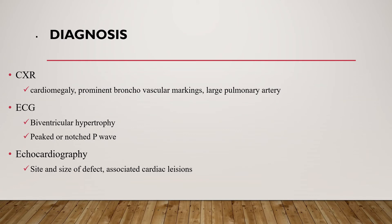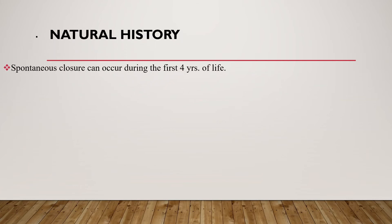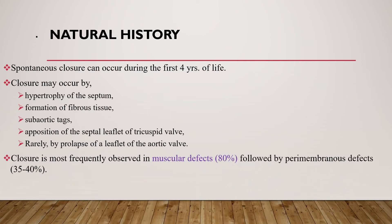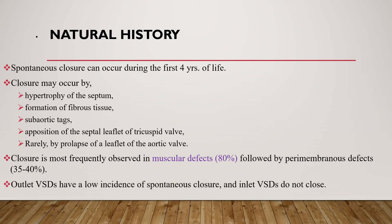Echocardiography can tell us the site and size of the defect and associated cardiac anomalies. Regarding the natural history of VSD, spontaneous closure can occur during the first four years of life by hypertrophy of the septum, formation of fibrous tissue, subaortic tags, opposition of the septal leaflet of the tricuspid valve, or rarely by prolapse of a leaflet of the aortic valve. Closure is most frequently observed in muscular defects. Perimembranous defects can close in 35 to 40 percent of cases. Outlet VSDs have a low incidence of spontaneous closure, and inlet VSDs do not close at all.